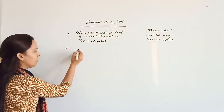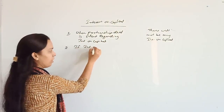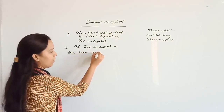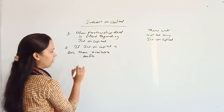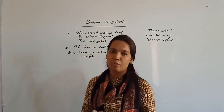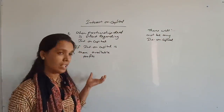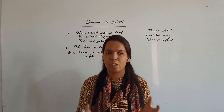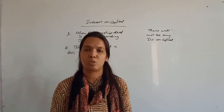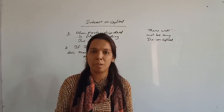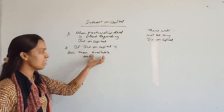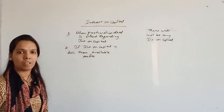This is the first condition. The second condition is if interest on capital is less than available profits. Suppose the firm's profit is 50,000 rupees and the interest on capital of two partners totals 40,000. Since profits are sufficient, the firm can easily pay the full interest on capital to the partners.